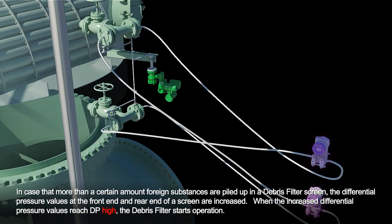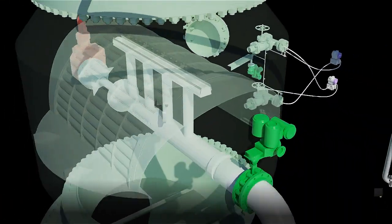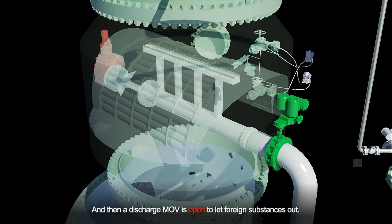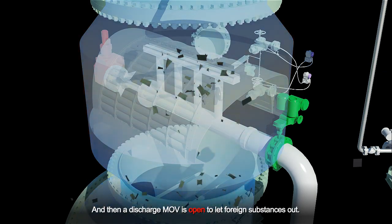In case that more than a certain amount of foreign substances are piled up in a debris filter screen, the differential pressure values at the front end and rear end of a screen are increased. When the increased differential pressure values reach DP high, the debris filter starts operation. And then a discharge MOV is open to let foreign substances out.